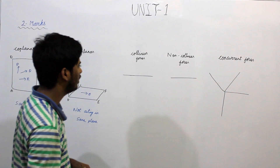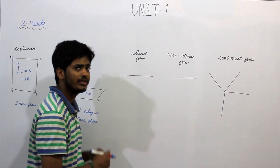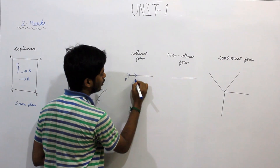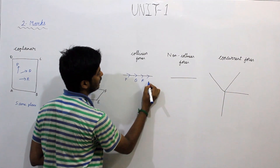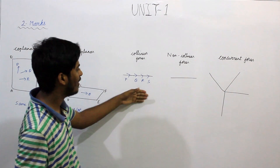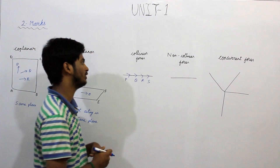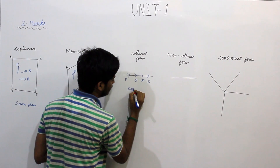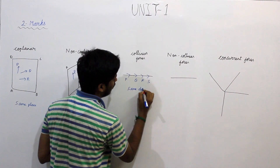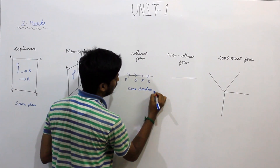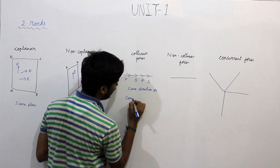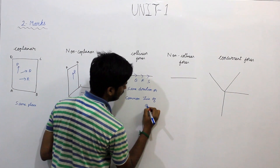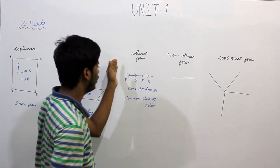Next are collinear forces. Collinear forces are those forces which have the same line of action. For example, forces P, Q, R, and S — these four forces have the same line of action, acting in the same direction or along a common line of action.